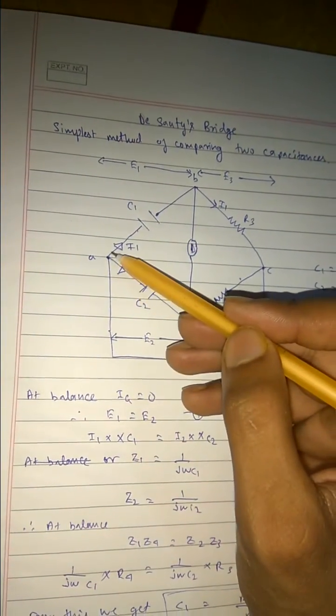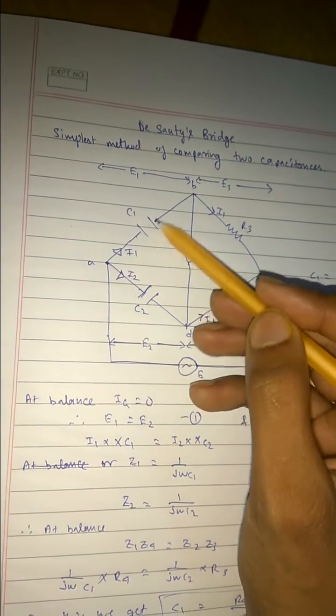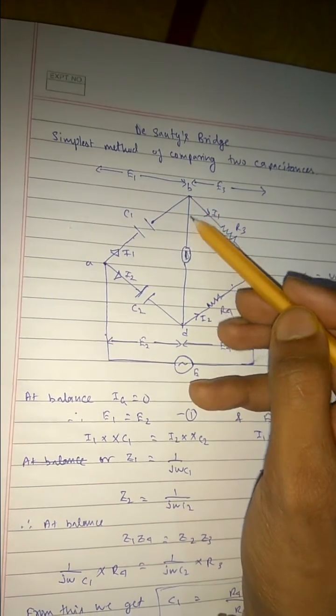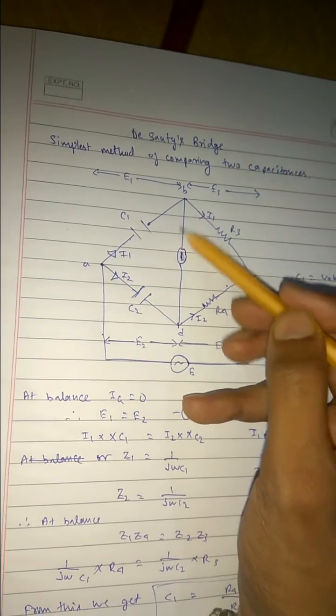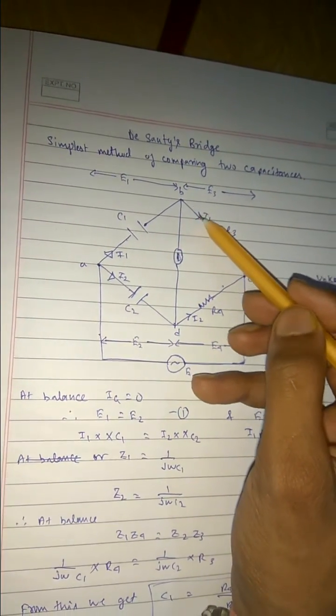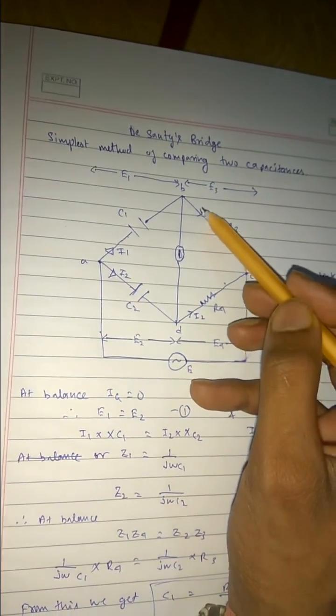I1 and this splits into I2, I1 and I2. I1 goes till this. Now at the balance condition there is no deflection in this, so no current flows through this, so this I1 current flows through this resistor, so this is also I1.